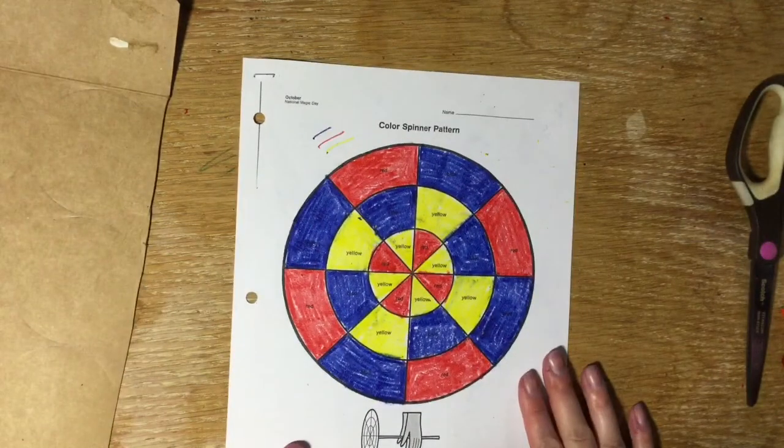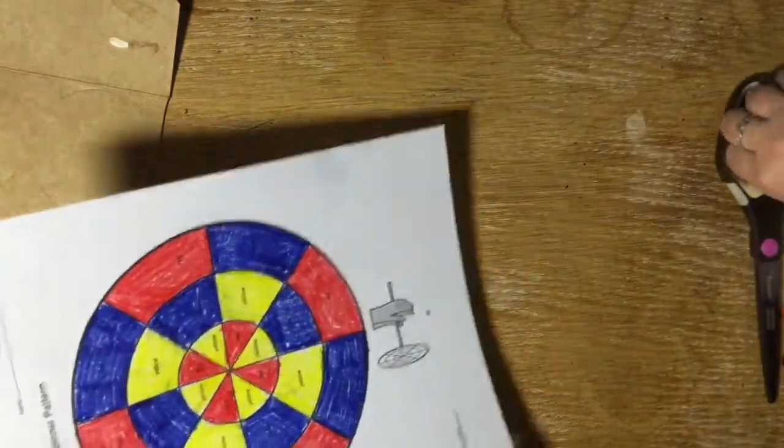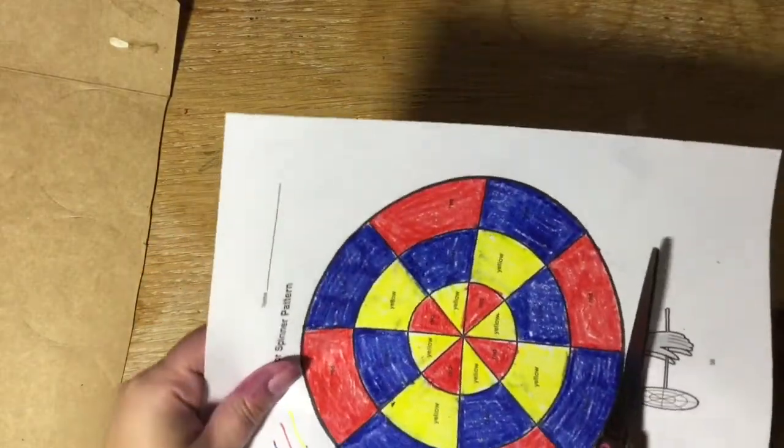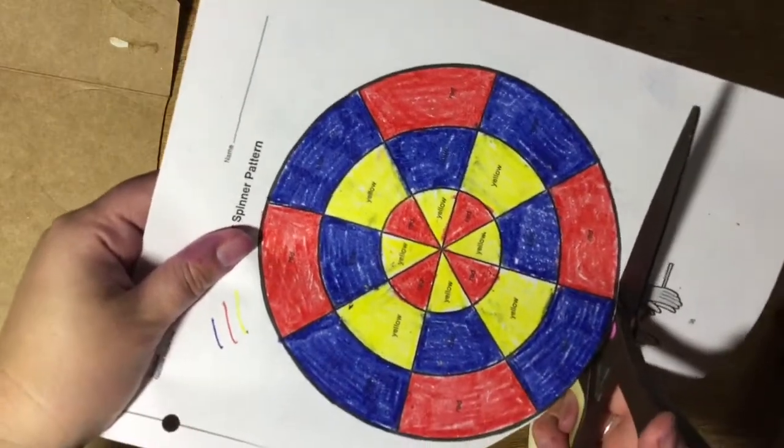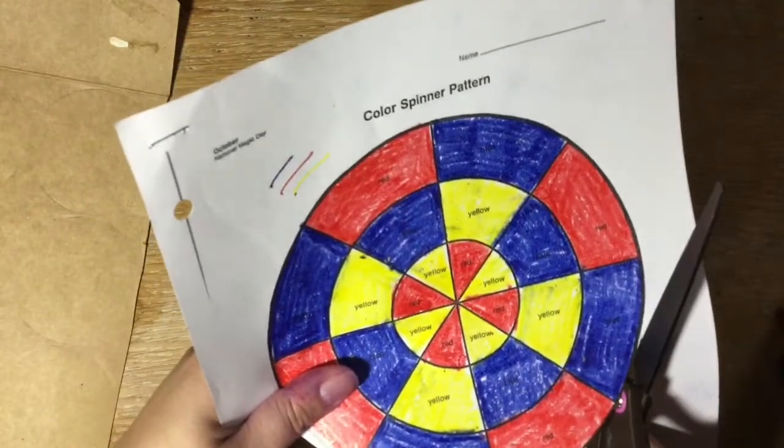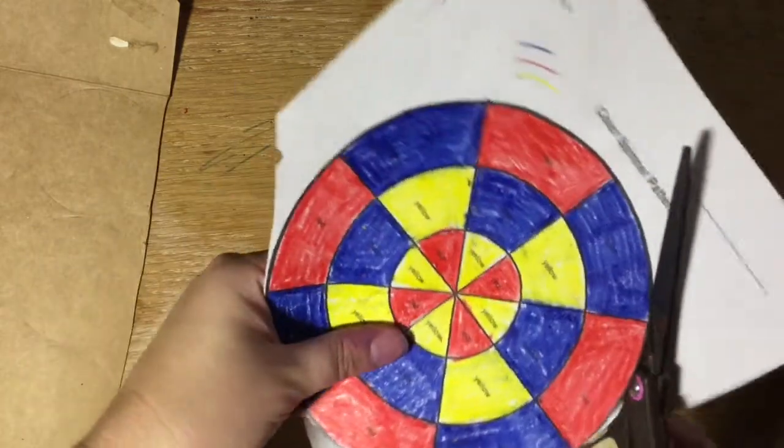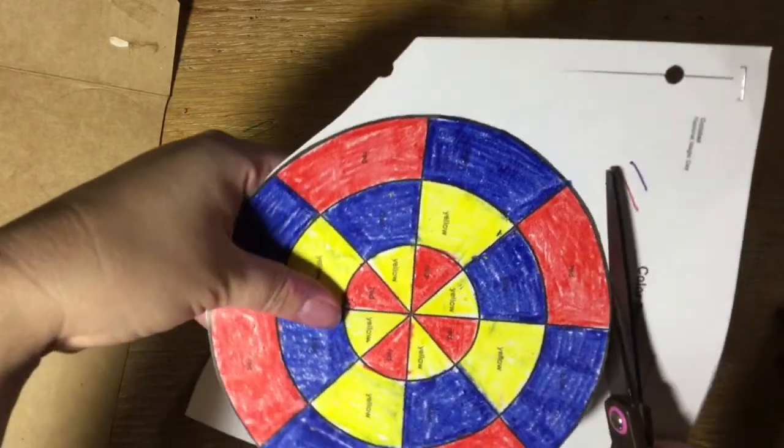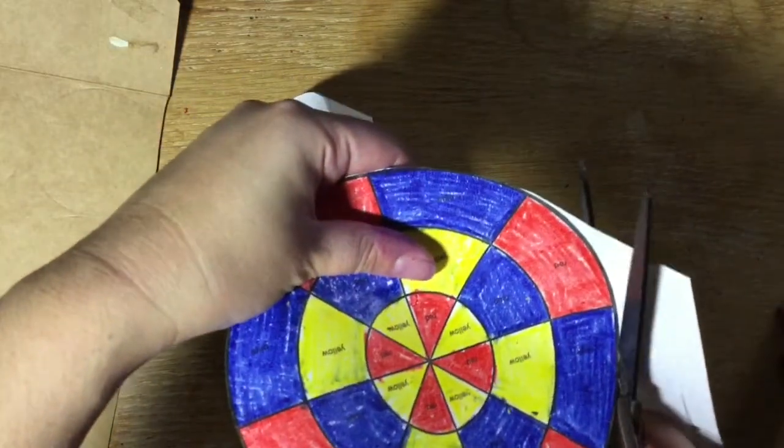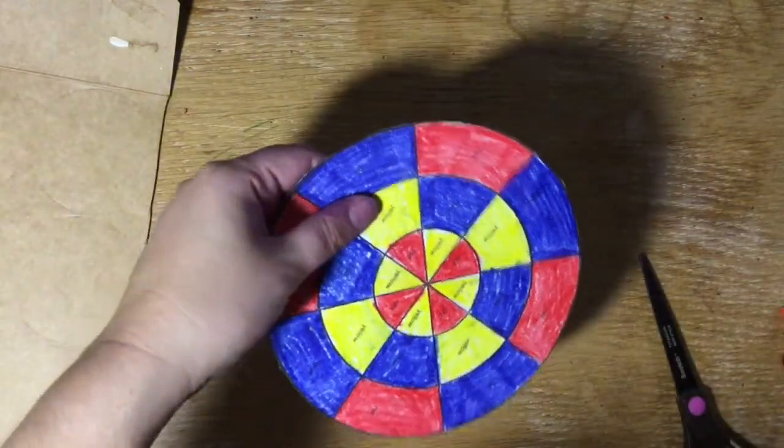Now that I have my color wheel, my color spinner colored in, I'm gonna cut it out using my scissors. Remember, you want to open your scissors up wide and put the paper that you're cutting back in the back like you're chomping on a hamburger. You wouldn't nibble on that hamburger with the front of your teeth. You want to get it all the way back in your molars. That way your cuts are nice and smooth. I'm gonna throw that away in the trash can.